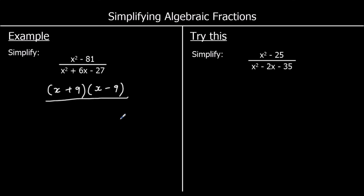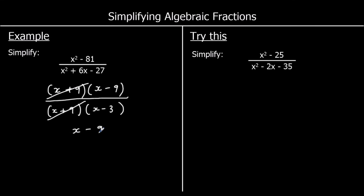And the bottom of the fraction — the denominator — again factorises into double brackets, so that's x in both. What multiplies to make negative 27 and adds to give 6? It's going to be plus 9 and minus 3. So the top and the bottom both have x plus 9 as a factor, so we can divide the top and the bottom by x plus 9, which leaves us with x minus 9 over x minus 3.